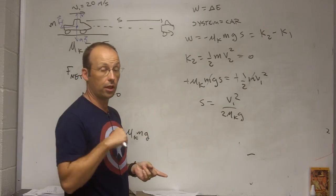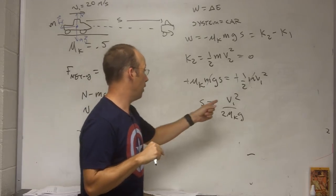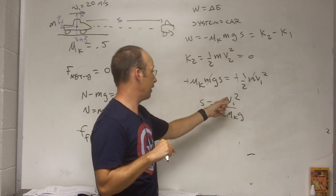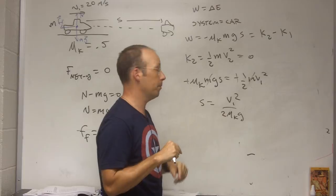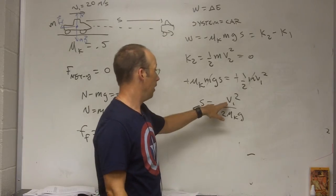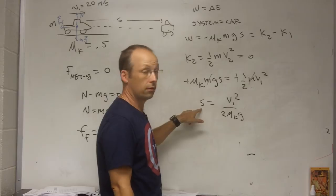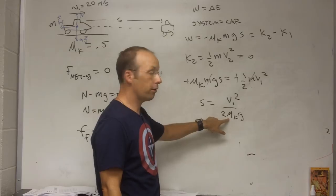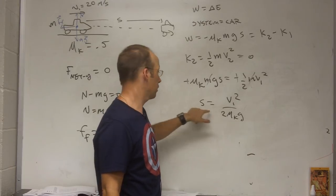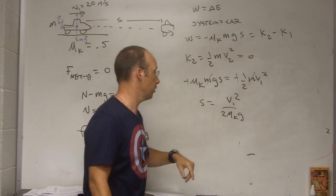Check the units here and check reasonableness. The units, meters squared per second squared over, this has no units, meters per second squared does give me meters. That's good. The faster I'm going, the longer it takes to stop, the farther it takes to stop. The greater the coefficient of friction, the shorter you stop. Those all make sense, so that's good.